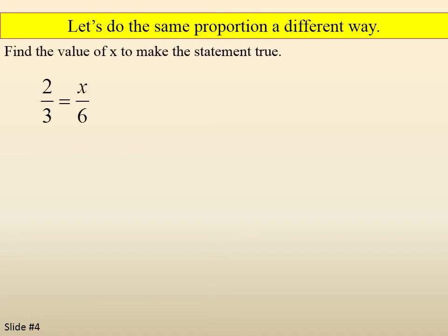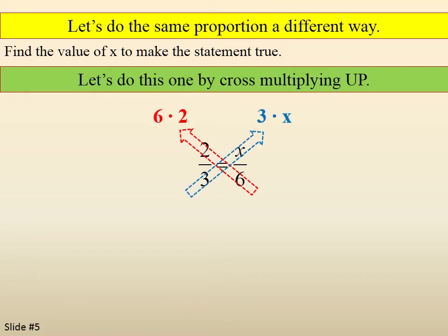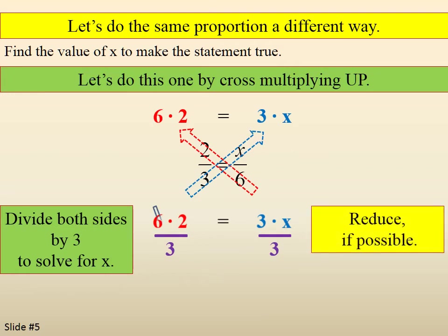Let's do the same proportion a different way using cross-multiplication. We cross-multiply: 6 times 2 and 3 times x. Because we're cross-multiplying up, we use the same equals symbol between the two results. Now, if we divide both sides by 3 to get x by itself, we end up with x equals 4, which is the same value we got when we converted the denominators.